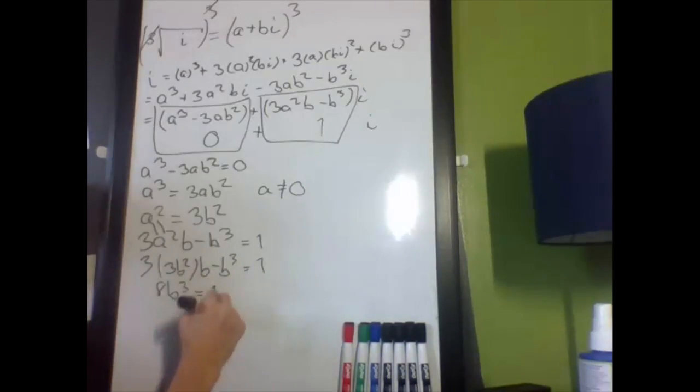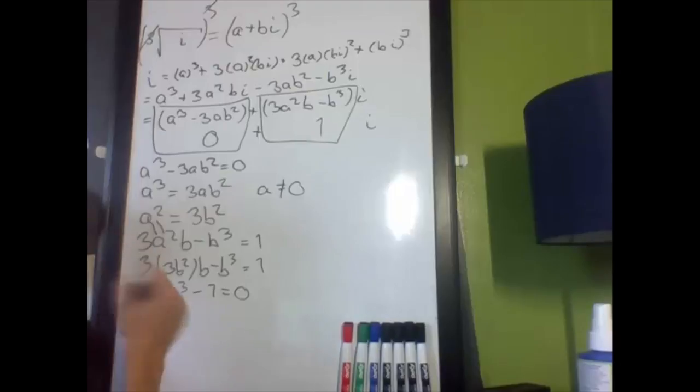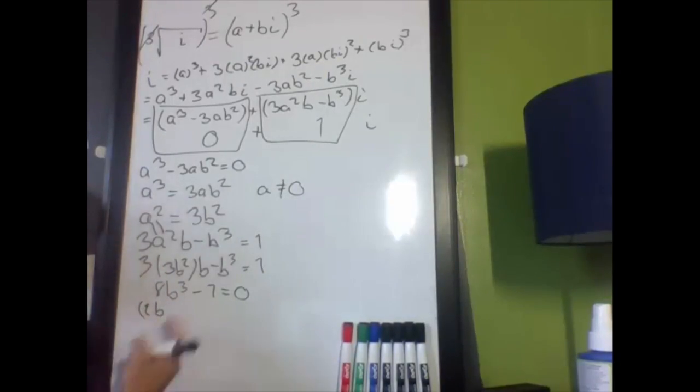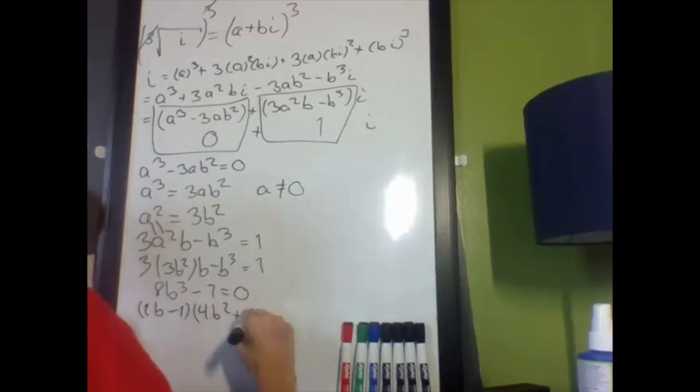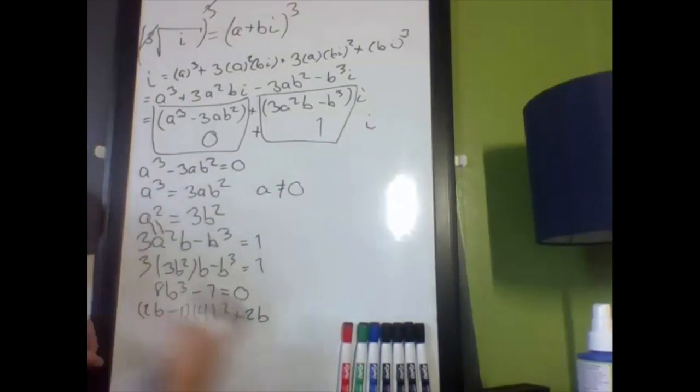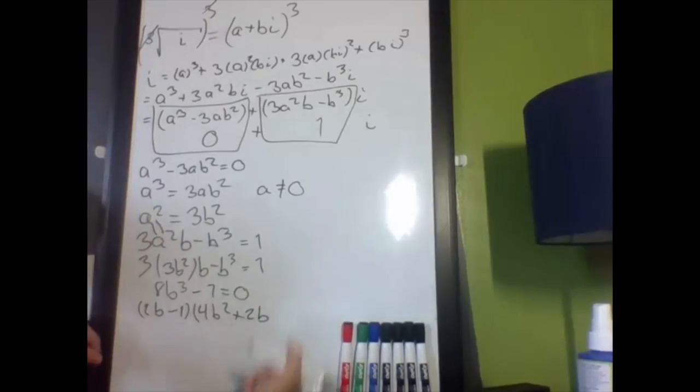Now, just to make sure we get all solutions, I'm going to factor this out using difference of cubes. And what you get is 2b minus 1 times, and you get 4b squared, again squaring it, plus 2b and then plus 1.